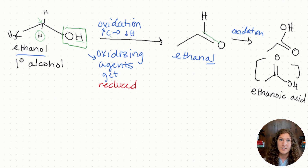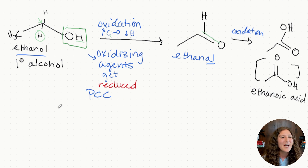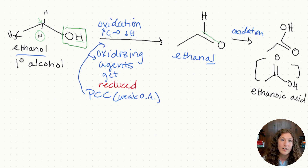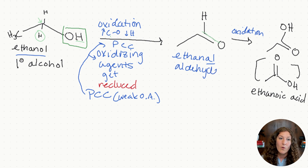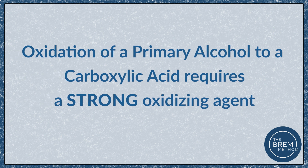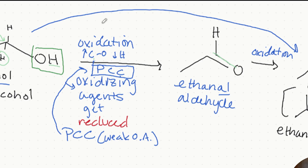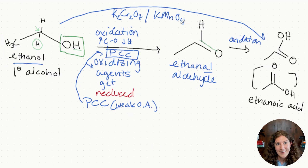There are several types of oxidizing agents that are good to know for testing. The first is PCC — pyridinium chlorochromate — which is a weak oxidizing agent. This one is excellent for the initial reaction from a primary alcohol to an aldehyde, because we don't want to go all the way to a carboxylic acid. If we did want to go all the way to a carboxylic acid, we'd want to use a stronger oxidizing agent — something like potassium dichromate or potassium permanganate, KMnO4. Those are two examples of stronger oxidizing agents that can convert a primary alcohol into a full carboxylic acid, going all the way through the aldehyde.